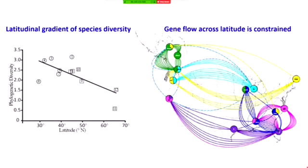We also see clear evidence of latitudinal gradients in diversity and gene flow. We propose that all of these phenomena are linked to genome surfing.